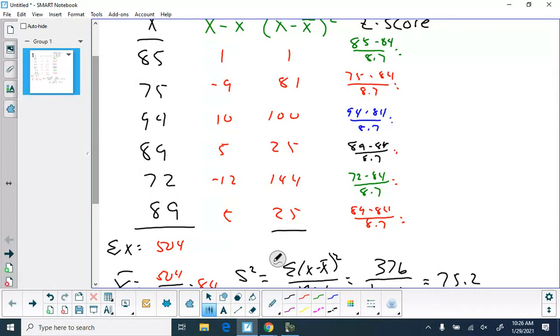And once again, the z-scores will eventually be utilized to calculate probabilities, which should come down to 0.11, negative 1.03, 1.15, 0.57, negative 1.38, and 0.57. Don't worry if you're off by a penny here, because I probably stored my entire standard deviation, the square root of the 75.2, and calculated by that value. So if you're off by a penny or so, don't worry about it.